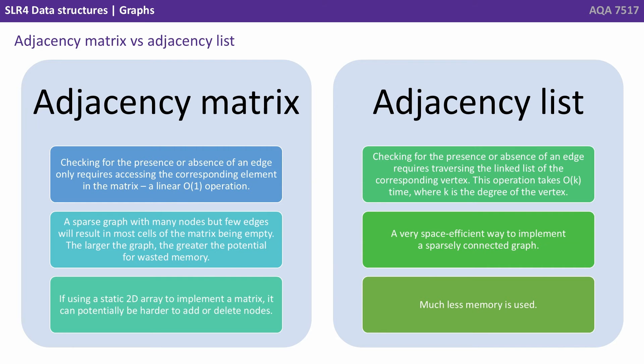So let's compare adjacency matrices to adjacency lists. With a matrix, checking for the presence or absence of an edge only requires accessing the corresponding element in the matrix, and this is a linear or O(1) operation. A sparse graph with many nodes but few edges will result in most cells of the matrix being empty. The larger the graph, the greater potential for wasted memory.